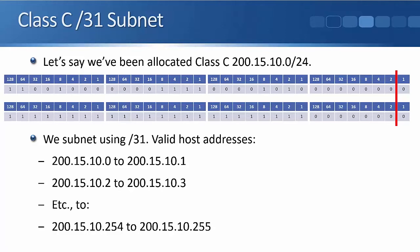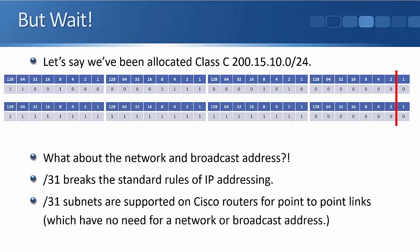You can check this: we're using 200.15.10, so the first three octets never change. In the last octet, you start with all zeros - 00000000, then 00000001, then 00000010, then 00000011, and so on. The last bit toggles between 0 and 1 for each subnet pair.